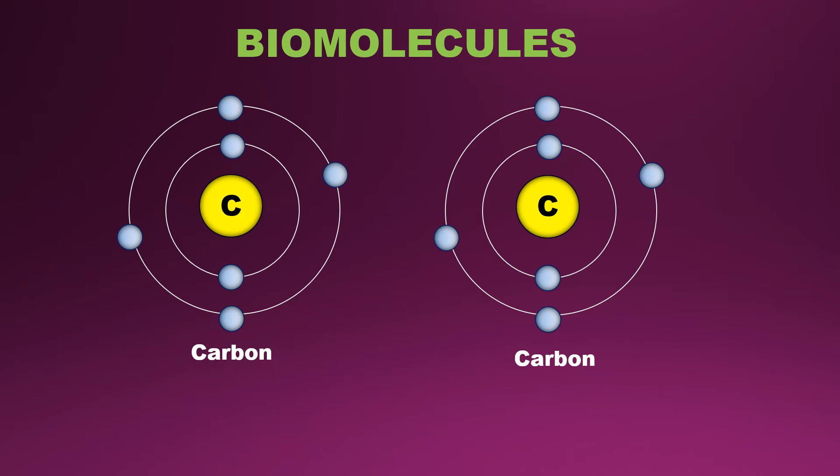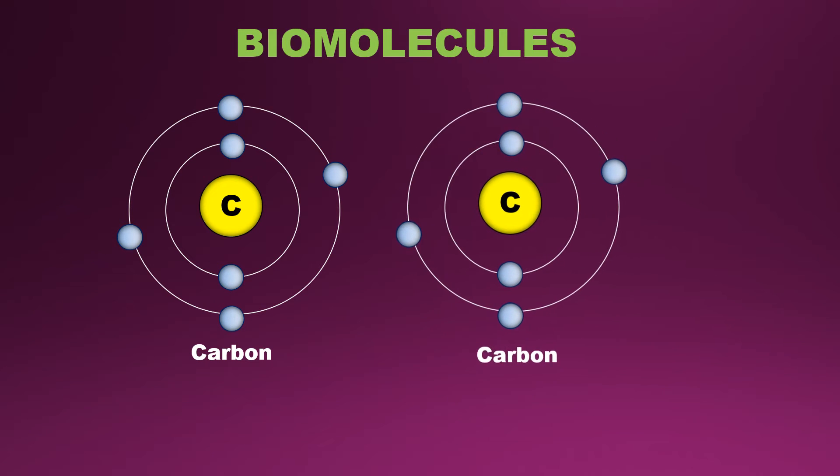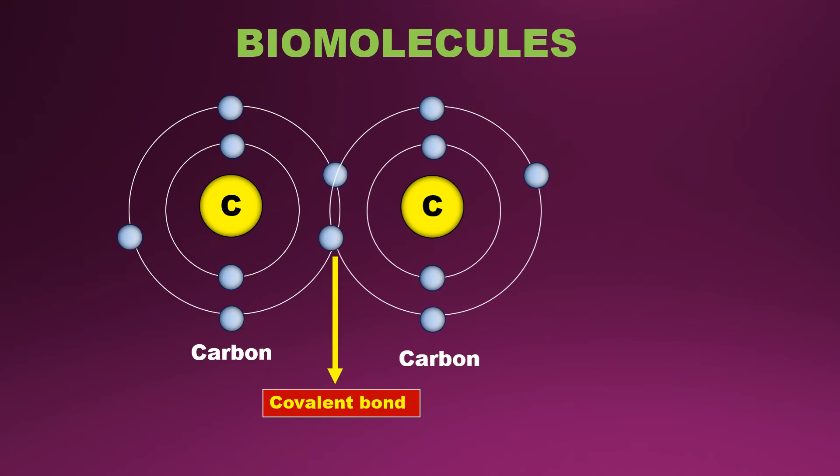Carbon atom is one of the basic compound of any biomolecules found in living organisms. You can see here two concentric circles which is known as outer shells or valence shells. Outer shell consists of six valence electrons. Thus, carbon to carbon atom interaction forms a covalent bond which is the strongest bond.